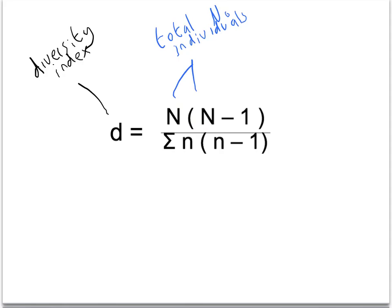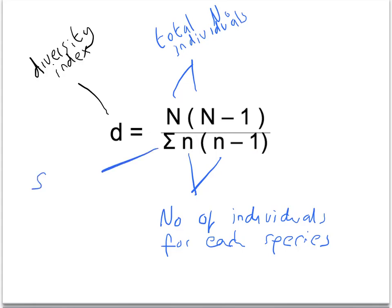On the bottom, you've got little n. Now, little n, it's the number of individuals for each species. So, you're going to need to do a few little calculations for each species. It would be the number of badgers multiplied by 1 minus that number, and then the number of owls multiplied by 1 minus that number, and then the number of foxes multiplied by 1 minus that number. And what this symbol here is, the sigma sign, this just means the sum of. So, it's adding those all together, turned up with your bottom number. So, let's have a look at the worked example.